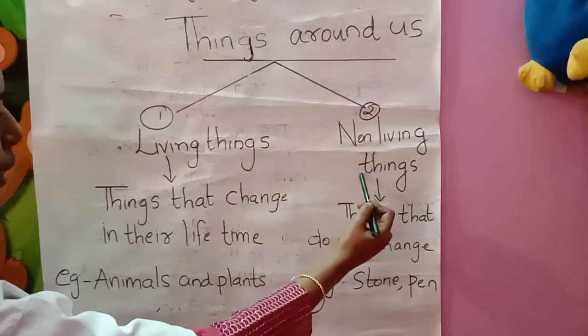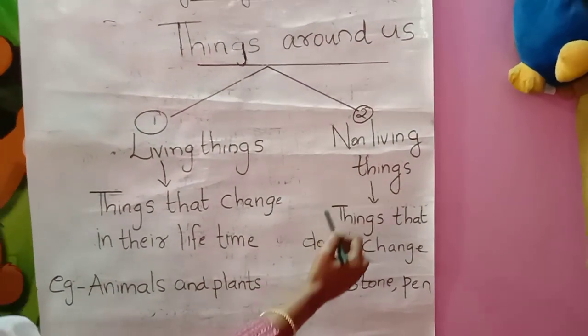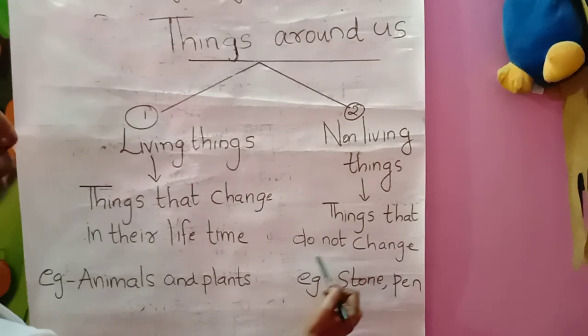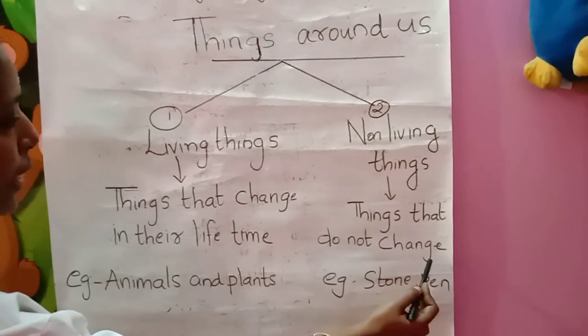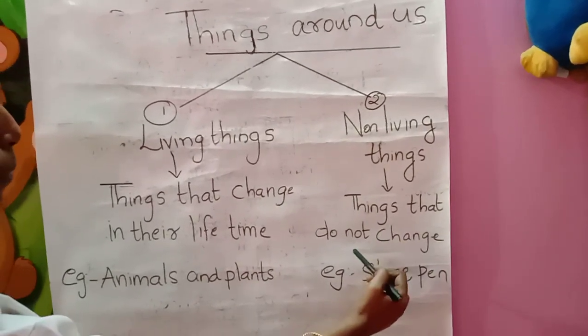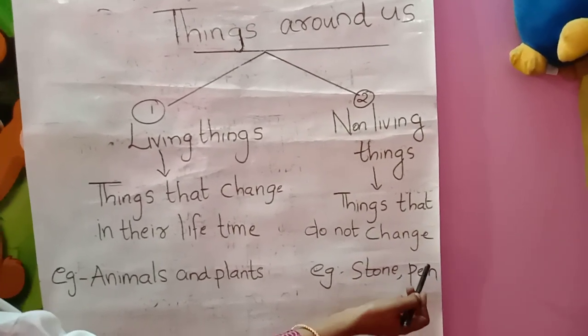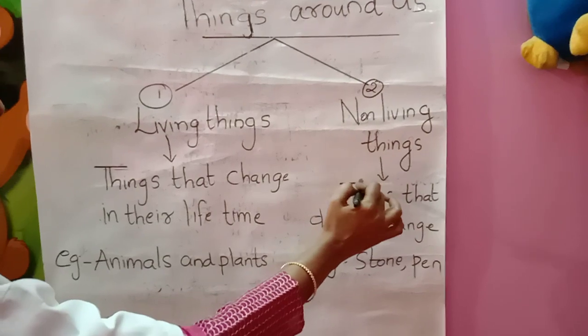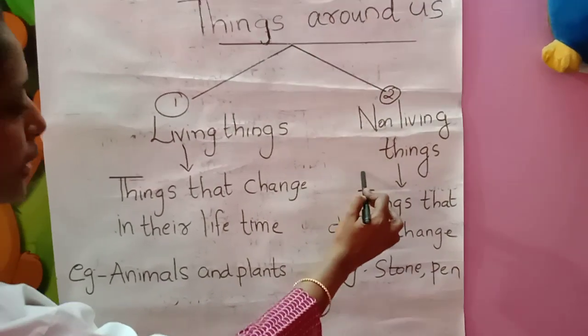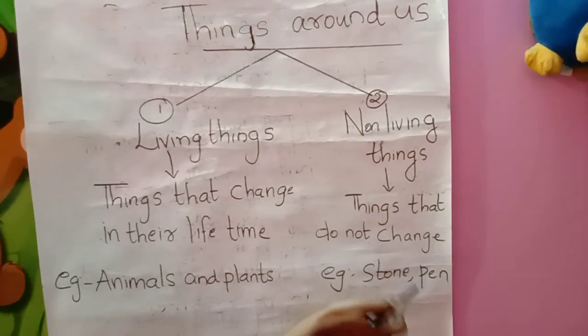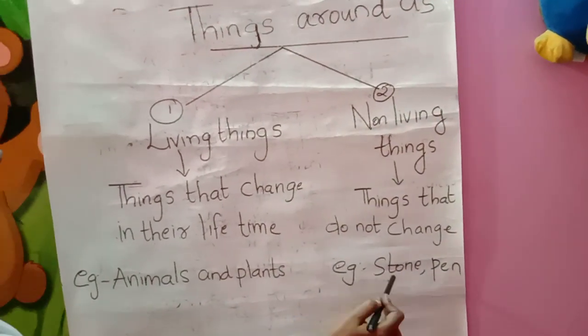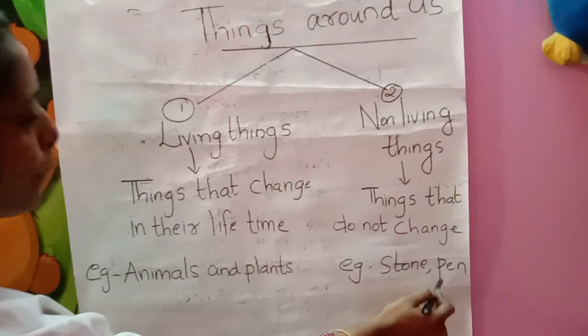Non-living things are things that do not change. For example, a stone and a pen.